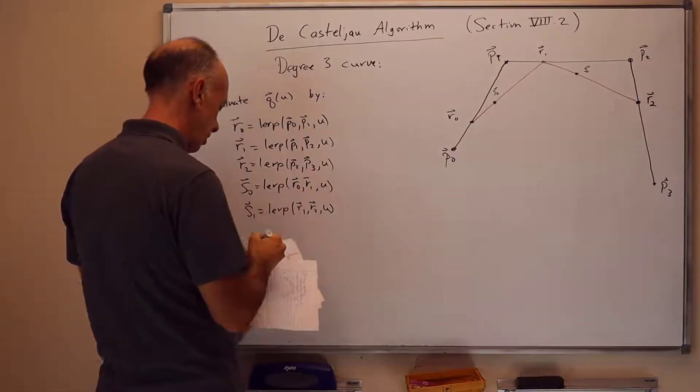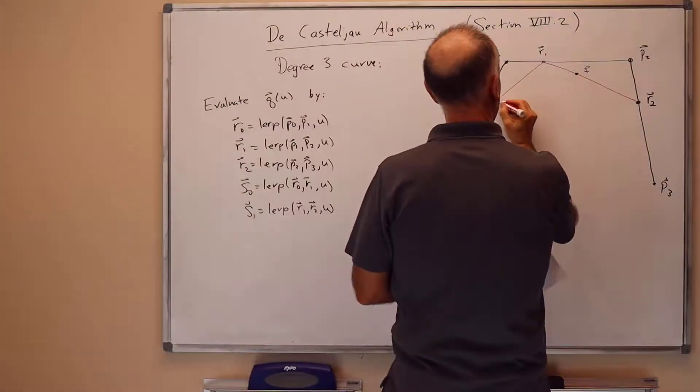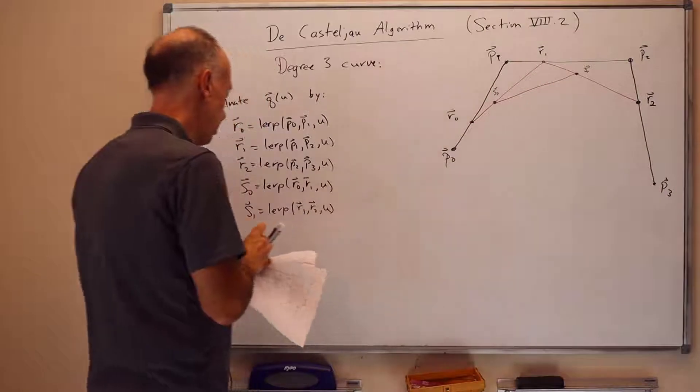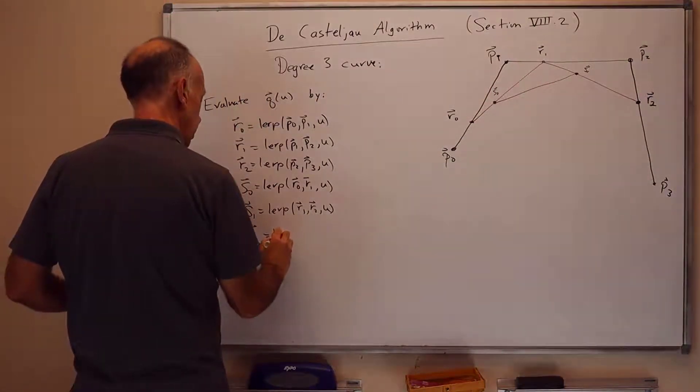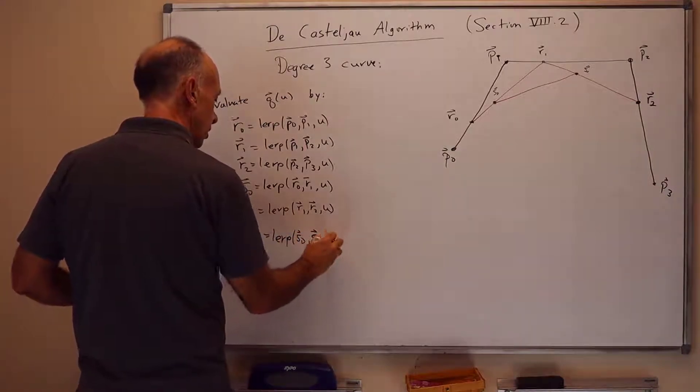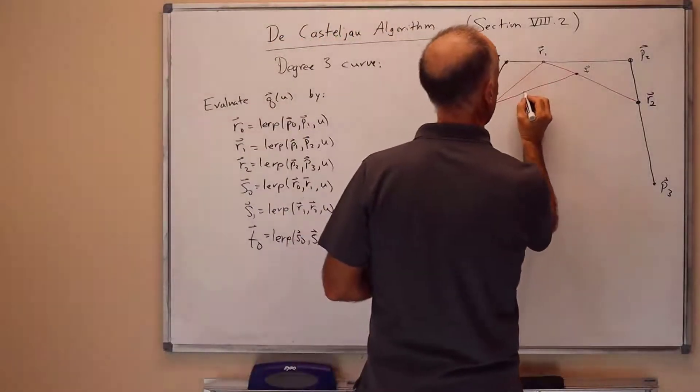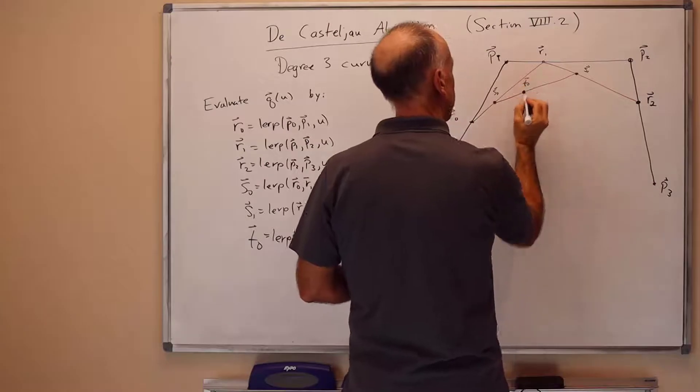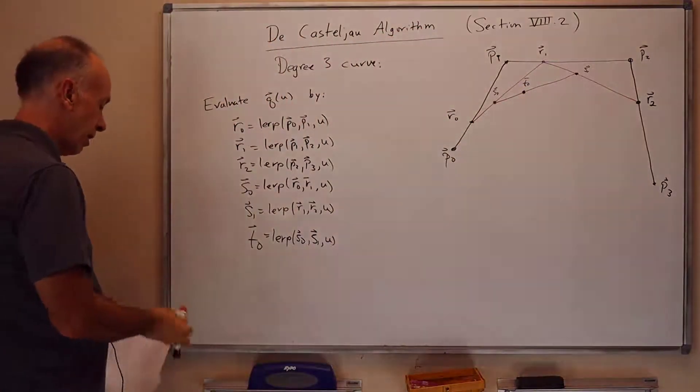And finally, we're going to form the straight line segment between S0 and S1, and we're going to lerp along it. And I'll call that T0, and that's lerping from S0 to S1, again by fraction U. So T0 in our picture sits right about there. So I've just done repeated lerping. We've arrived at T0.